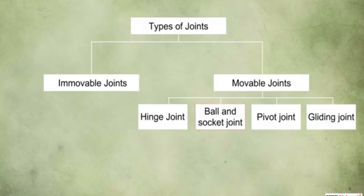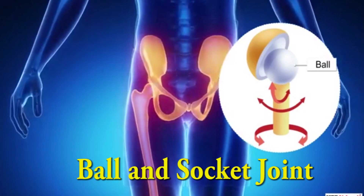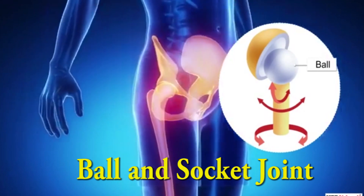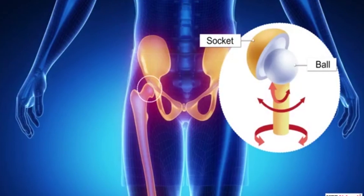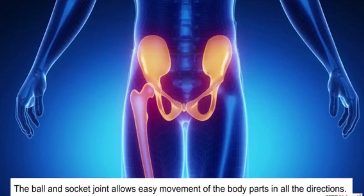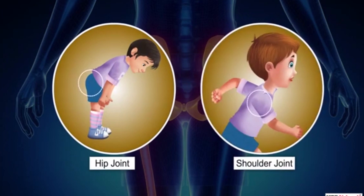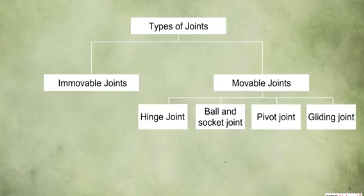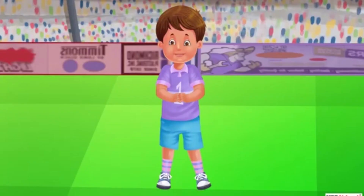Let us now learn about the ball and socket joint. In this joint, the end of one bone acts like a ball and fits into another bone which acts like a socket. This arrangement allows easy movement of the body parts in all directions. The hip joint and the shoulder joint are two examples of the ball and socket joint.